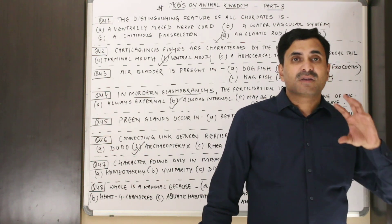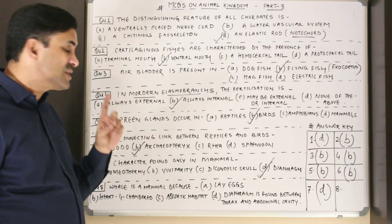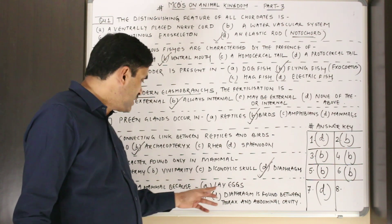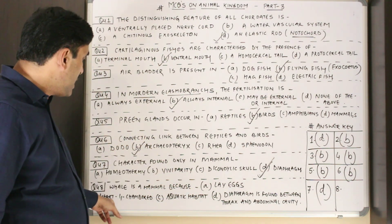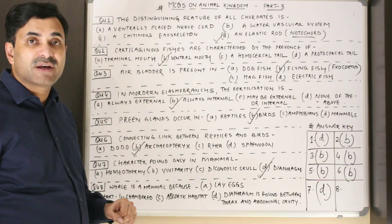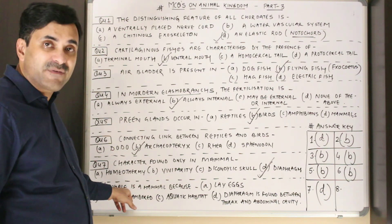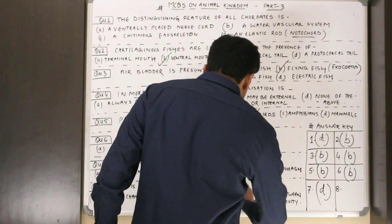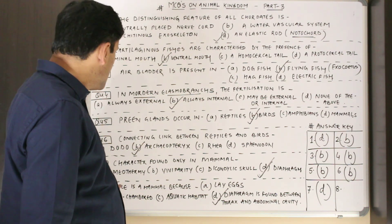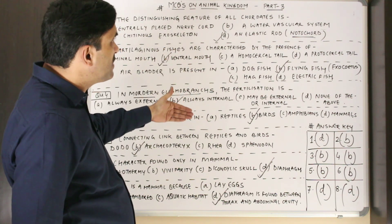Question number eight: whale is a mammal because — it lays eggs, heart is four-chambered, aquatic habitat, or diaphragm is found between thoracic and abdominal cavity? Whale should not be confused with fish just because it lives in an aquatic environment. It lays eggs is not the reason. As discussed in question seven, the diaphragm is the special feature of mammals. Whales have a diaphragm between the thoracic and abdominal cavity, which is why they are mammals. Question number eight answer: D.